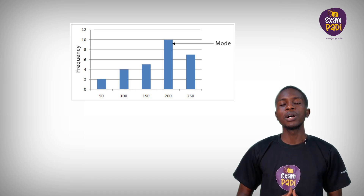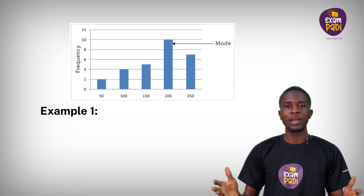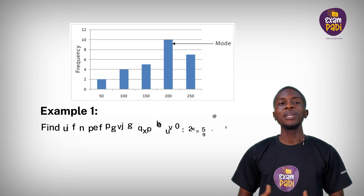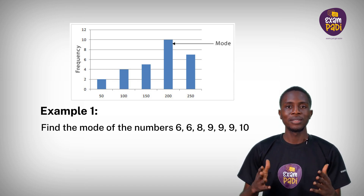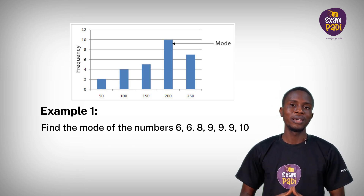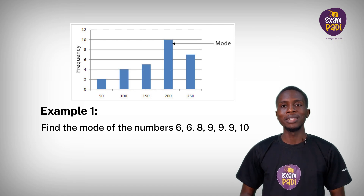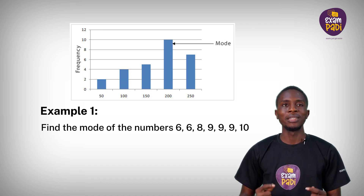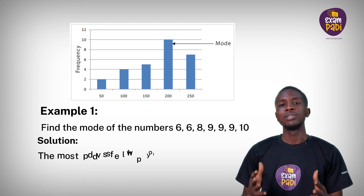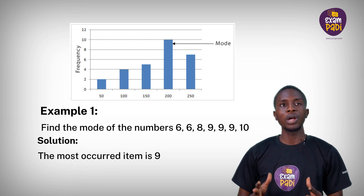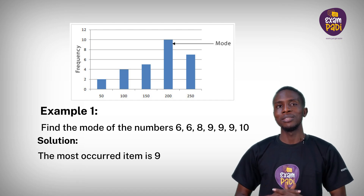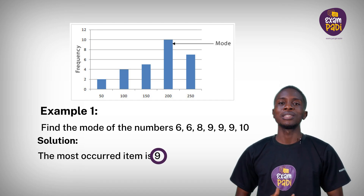Let's take a look at a few examples. Example 1: Find the mode of the numbers: 6, 6, 8, 9, 9, 9, and 10. Solution: the most occurred item is 9. Hence, the mode is 9.